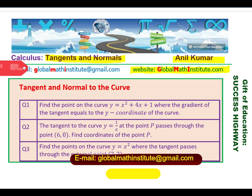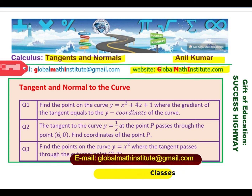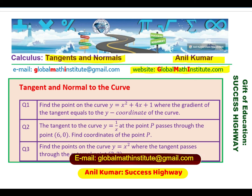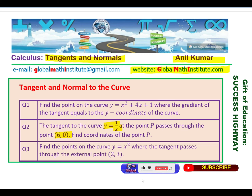One of them is always seen in a test paper. The three types of questions here are: first, we need to find the point on the curve y equals x squared plus 4x plus 1 where the gradient of the tangent equals the y coordinate of the curve — so tangent gradient equals y coordinate. Question two: the tangent to the curve y equals 1 over x at the point P passes through the point (6, 0), with the coordinates of point P to be found. And question three: find the points on the curve y equals x squared where the tangent passes through the external point (2, 3). Note that (6, 0) in the previous case is also an external point. Please pause the video, attempt these questions, and then look into my suggestions. We are going to take the solution of all three questions in this video.